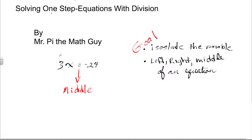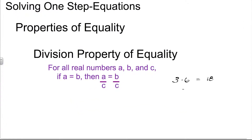Since this is the middle, on the left-hand side of the equation, we have 3x. And on the right-hand side of the equation, we have negative 24. Our goal is to isolate the variable, so we want to get the variable by itself. We're going to have to get rid of this 3 — that's what this video is about: teaching you how to get rid of that coefficient of 3.